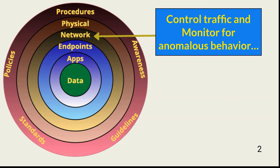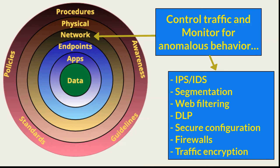This includes securing the data center and wiring closets containing patch panels and access layer switches. Network security also includes the use of network layer intrusion prevention and detection systems, network segmentation secured with segment access control lists, web filtering, data loss prevention filtering, secure switch and router configurations, firewalls at the perimeter and at ingress points leading to network segments, and traffic encryption as dictated by risk.